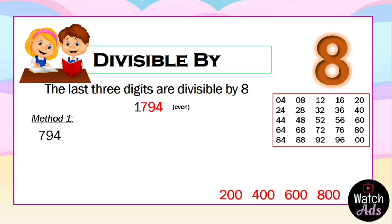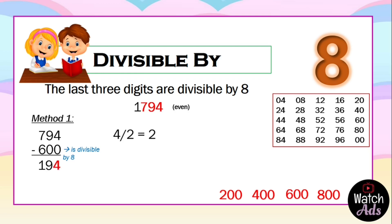We choose the largest magic number we can subtract from 794, which is 600. 794 minus 600 equals 194, since 600 is divisible by eight. Now we take the last digit, 4, and divide it by 2 — the answer is 2.